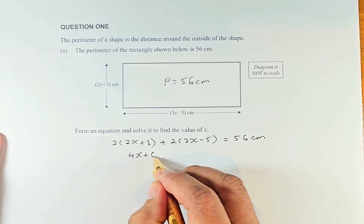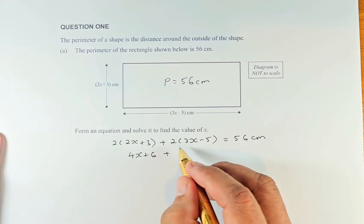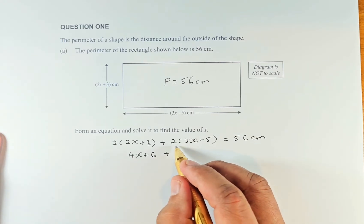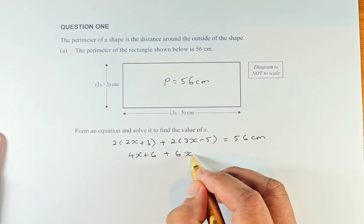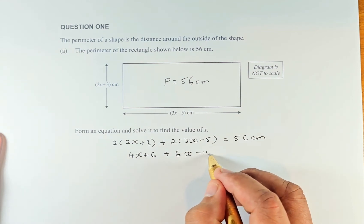On the second expression, 2 times 3x is 6x and 2 times minus 5 is minus 10.